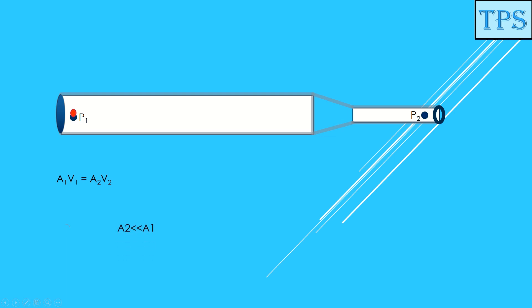One thing which needs to be noticed is that area at point 2 is much less than area at point 1, and therefore the velocity at point 2 should be higher than the velocity at point 1. Let's simulate this.